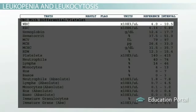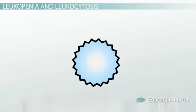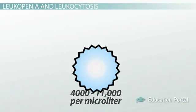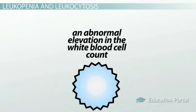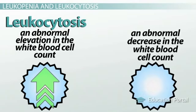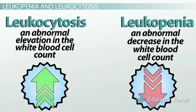One value is shortened as WBC — it stands for white blood cells. The normal white blood cell count in a person's body is approximately 4,000 to 11,000 cells per microliter. An abnormal elevation in the white blood cell count is called leukocytosis. An abnormal decrease in the white blood cell count is termed leukopenia.